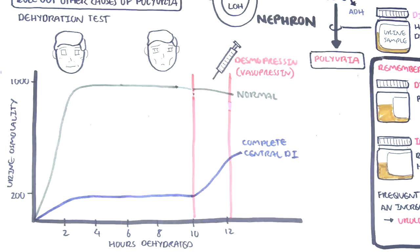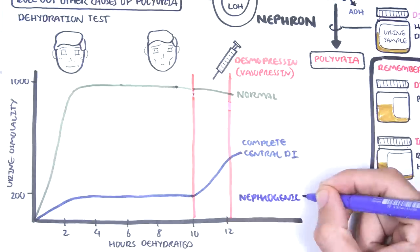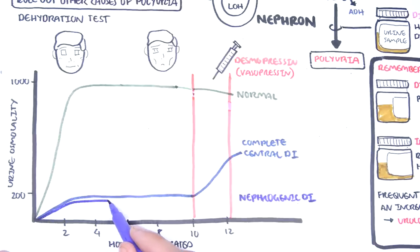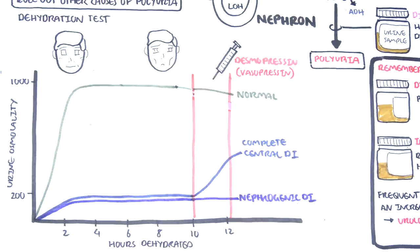The dehydration test can also differentiate central from nephrogenic diabetes insipidus. In nephrogenic diabetes insipidus, ADH is present and being produced, but it has no effect because of problems in the kidneys. The person will have dilute urine throughout the dehydration test. When desmopressin is given at hour 10, urine osmolality remains unchanged because the problem is in the kidneys — there is sufficient ADH, but it cannot exert its physiological effect. ADH levels can be measured at any time.